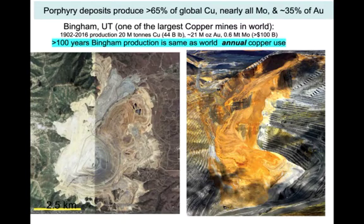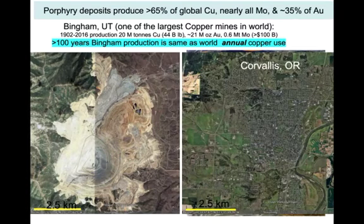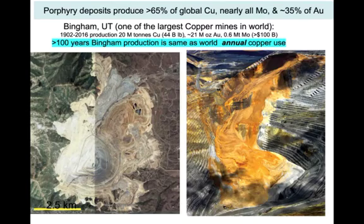Porphyry copper deposits, for example, produce about 65% of global copper, nearly all the molybdenum, and 35% of the gold. One of the largest in the world is the Bingham deposit in Utah. It's mined three cubic kilometers of rock and produced about 20 million metric tons of copper — roughly what the world uses each year. So we have to constantly look for new sources of copper as it's mined out.